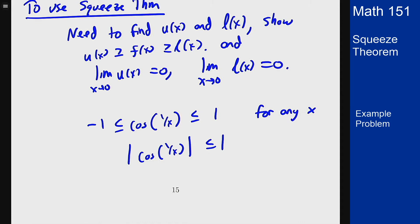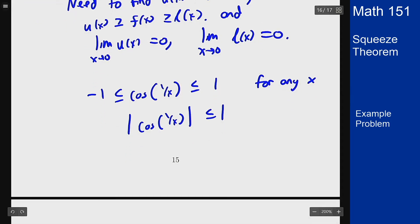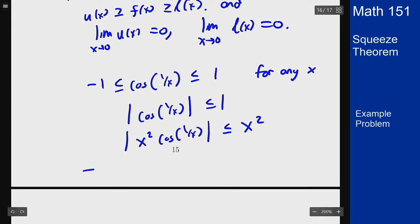By multiplying both sides of this inequality by x squared, I get that the absolute value of x squared cosine of 1 over x is less than x squared, because I can put the x squared inside the absolute value, and now I can unpack the absolute value again to get that minus x squared is less than or equal to x squared cosine of 1 over x is less than x squared.